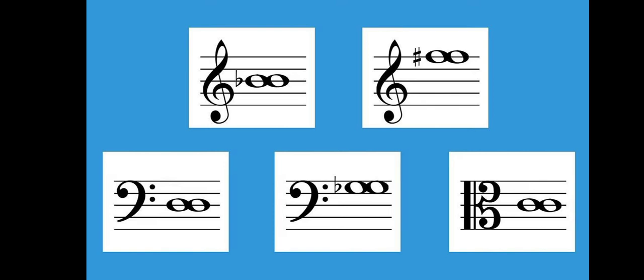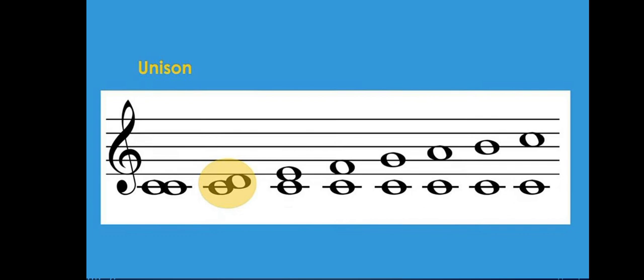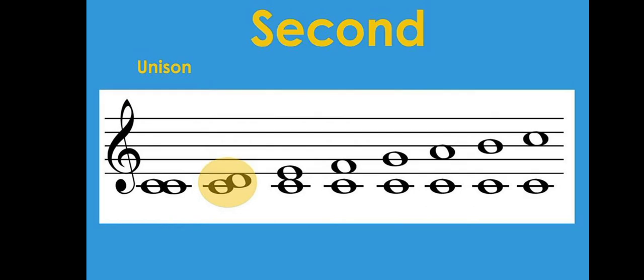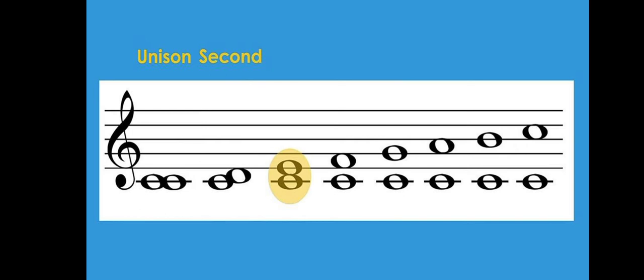Now looking at the next one, the first note is in the line C and the next one is just above it in the space D. So it is one and then two — this one is called a second. Then the next one: the first note is in the line C and the next one is in the line E. We give C one, D two, and E three. So this is a third.